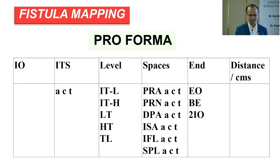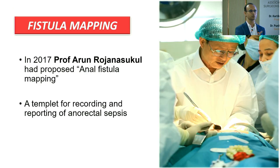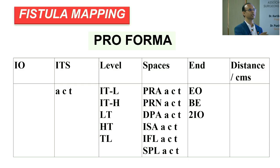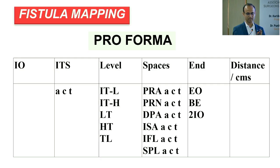To address this, Dr. Rajan Sukhal has developed the fistula mapping concept — a template to record anogenital sepsis (fistula and abscess together). It is a simple proforma with five points: internal opening location, intrasphincteric space (abscess cavity or track), level (intrasphincteric low/high, transsphincteric low/high, or suprasphincteric), the seven anogenital spaces (perianal, perineum, deep post-anal channel, infra-elevator, supra-elevator), and external opening — whether blind-ending or with a second internal opening.